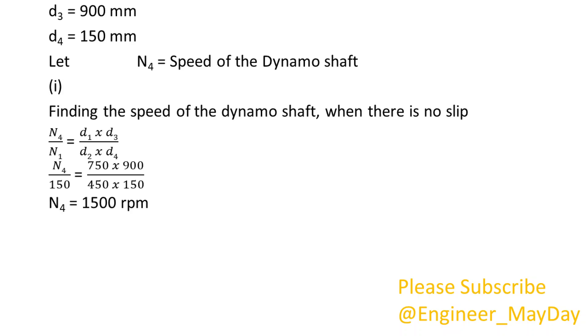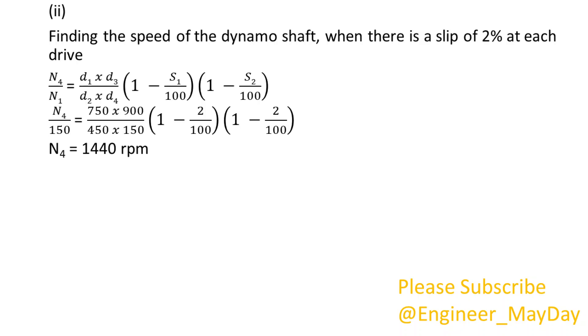1. Finding the speed of the dynamo shaft, when there is no slip. N4 equals 1500 rpm. 2. Finding the speed of the dynamo shaft, when there is a slip of 2% at each drive. N4 equals 1440 rpm.